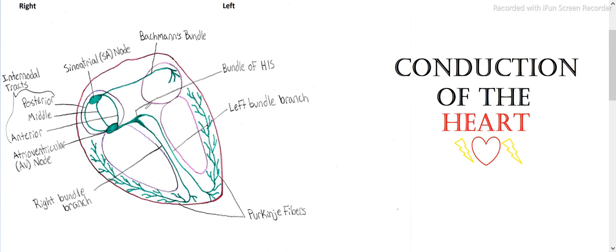So this can do the first S1 contraction, so the lub, and then it goes into the contraction of the ventricles, which is the dub, or otherwise known as S2. The actual percussion noise we are hearing of the lub, or S1, are the atrioventricular valves closing when the blood flows into the aorta and into the pulmonary artery.